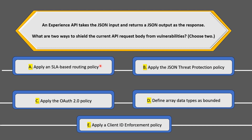Option A is apply SLA-based routing policy. The SLA-based routing policy is something you implement when you want a specific throttle for a specific client. The client requests access to an API, and as an administrator you grant that request. The client selects a tier — silver, gold, or platinum — each representing a specific quota of requests allowed to the API endpoint. In the context of this question, though this protects your API from a client overloading it, it does not help with shielding the API request body from vulnerabilities.